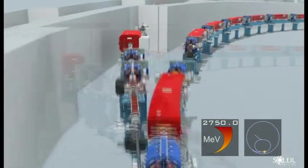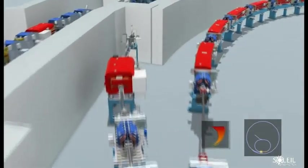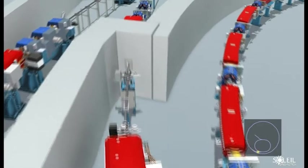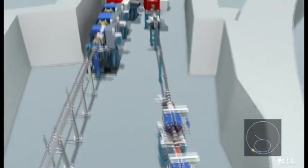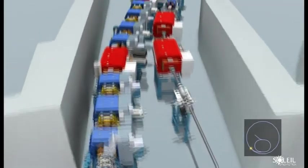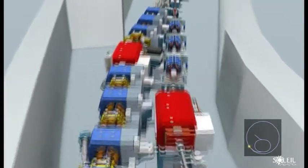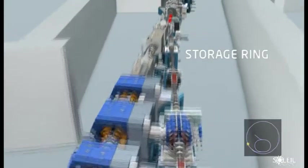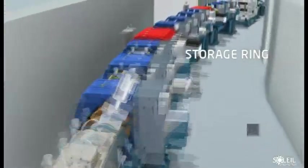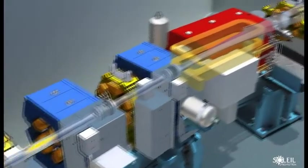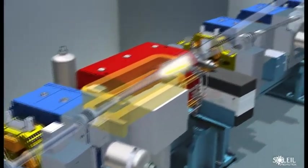Now the electron bunches are ready for the last stage of their journey. The electron bunches are injected into the storage ring, where they will circulate for several hours in the form of a beam thinner than a strand of hair. This storage ring, with a circumference of 354 meters, is a series of alternating bends and straight sections.